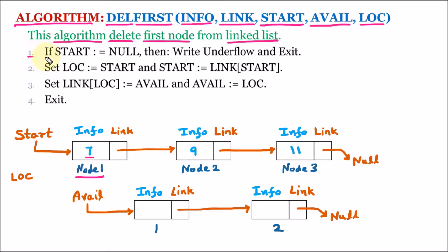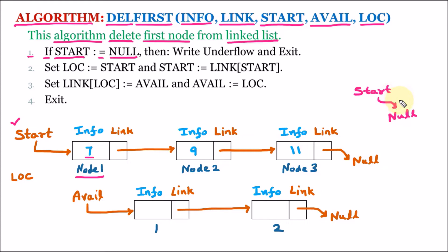Line number 1 says: if start is equal to null. We know that the linked list on which we work has a start pointer, but if start is null, that signifies we don't have any node inside the list. So we don't have any node to delete. In that case the algorithm will write underflow, meaning there is no node to delete, and it will exit from the algorithm.